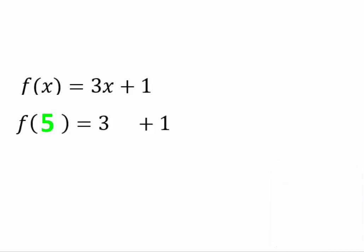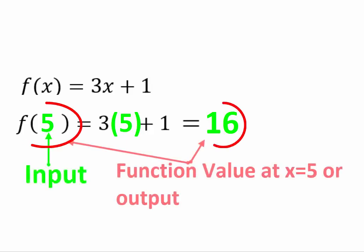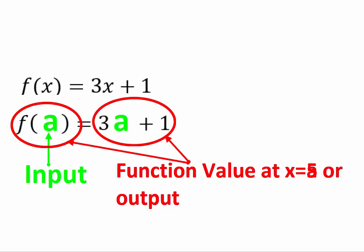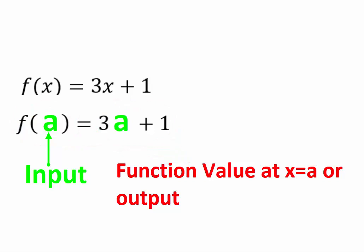Assuming you've come back, you're going to replace x with 5. So we're going to have 3 times 5 plus 1, or 16, as our answer. So 5 is our input and 16 is our function value at x equals 5. When we had a, then a would be our input and 3a plus 1 would be our output. So we might now know how to mechanically evaluate function values given an input.